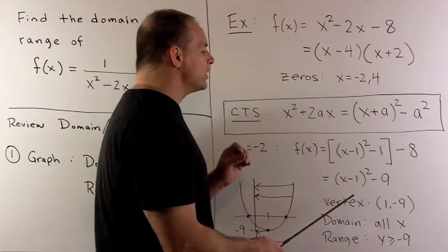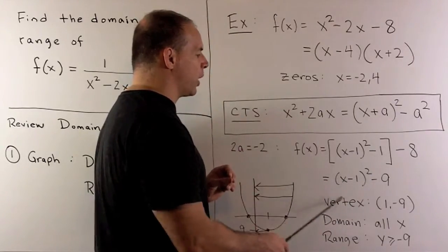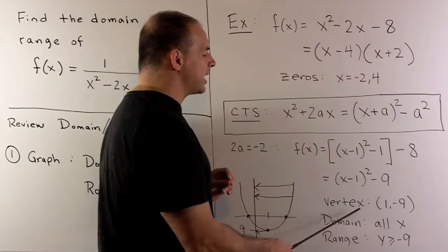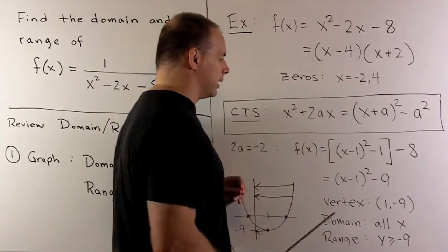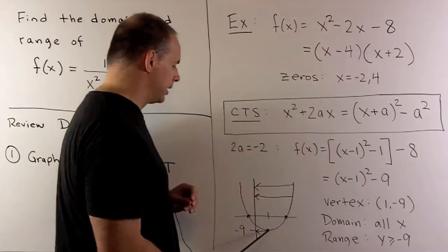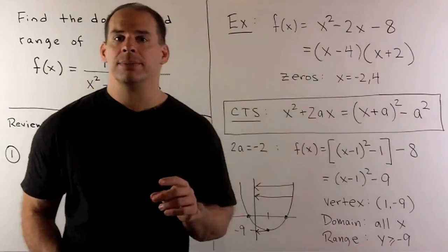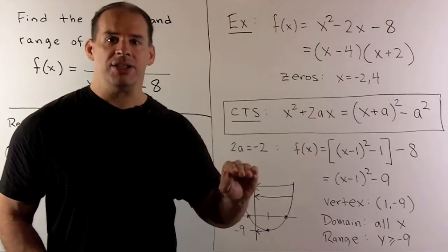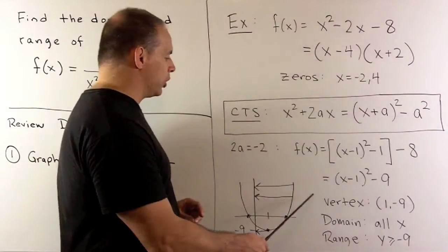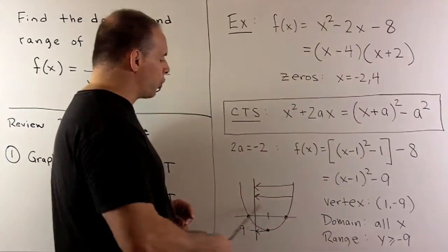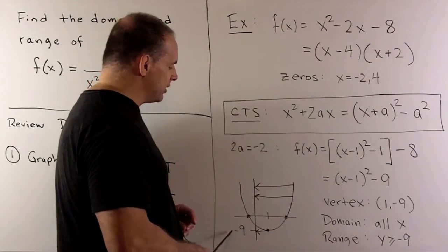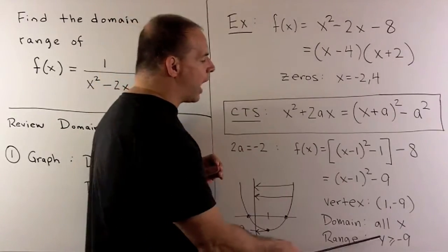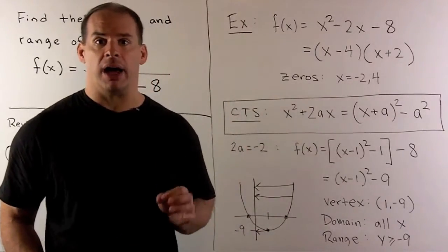Our vertex is going to be the point which makes the square term equal to 0, so we have our vertex at (1, -9). That means if we put in our horizontal lines, we're going to have intercepts for the graph all the way down until we hit -9. So our range is going to be y ≥ -9.